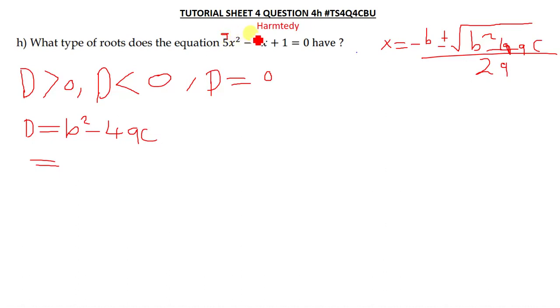Our b is the coefficient of x, and our c is the constant. So we can now plug in the values. We have 3 squared minus 4 times a, our a is 5.